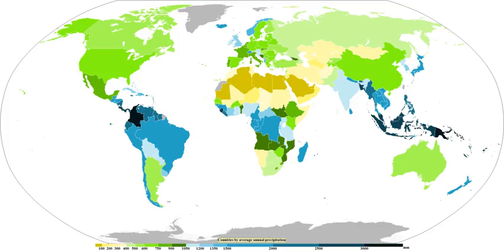Like other precipitation, hail forms in storm clouds when supercooled water droplets freeze on contact with condensation nuclei such as dust or dirt. The storm's updraft blows the hailstones to the upper part of the cloud. The updraft dissipates and the hailstones fall down, back into the updraft, and are lifted again. Hail has a diameter of 5 mm or more. Within METAR code, GR is used to indicate larger hail of a diameter of at least 6.4 mm; GR is derived from the French word grêle.